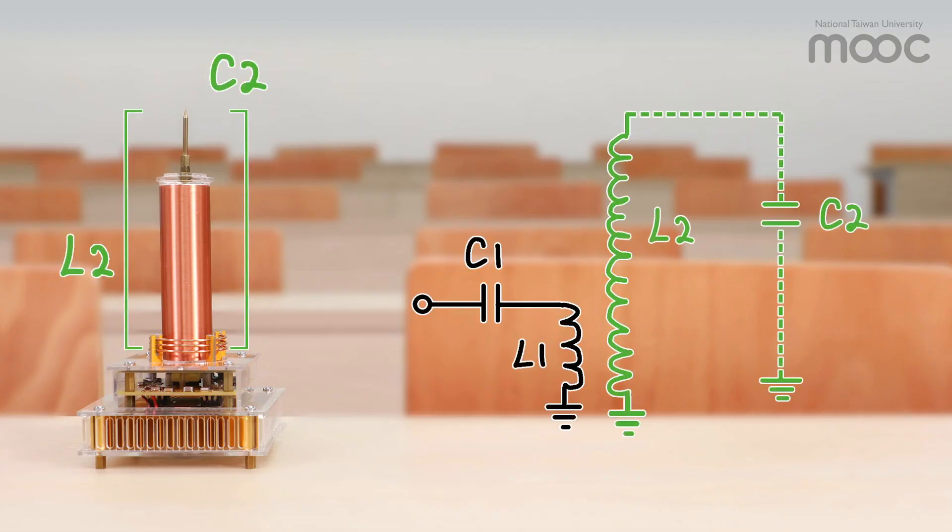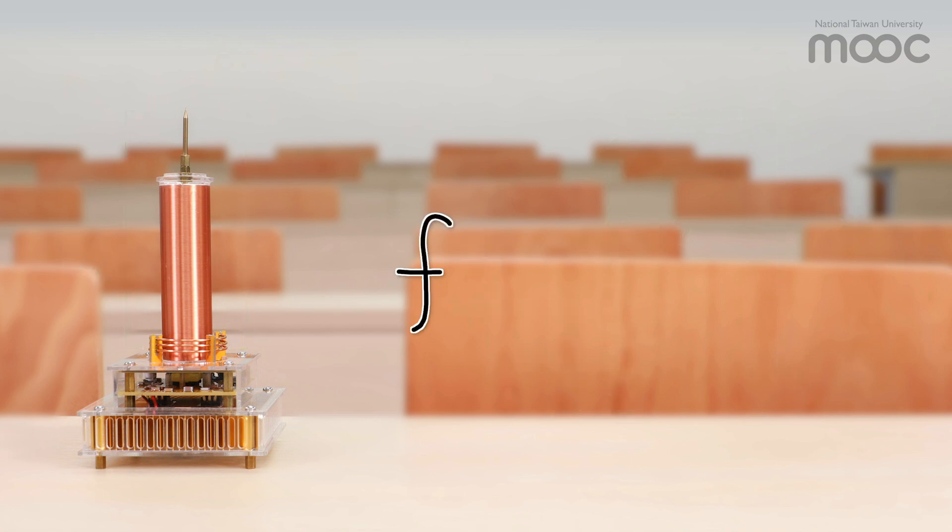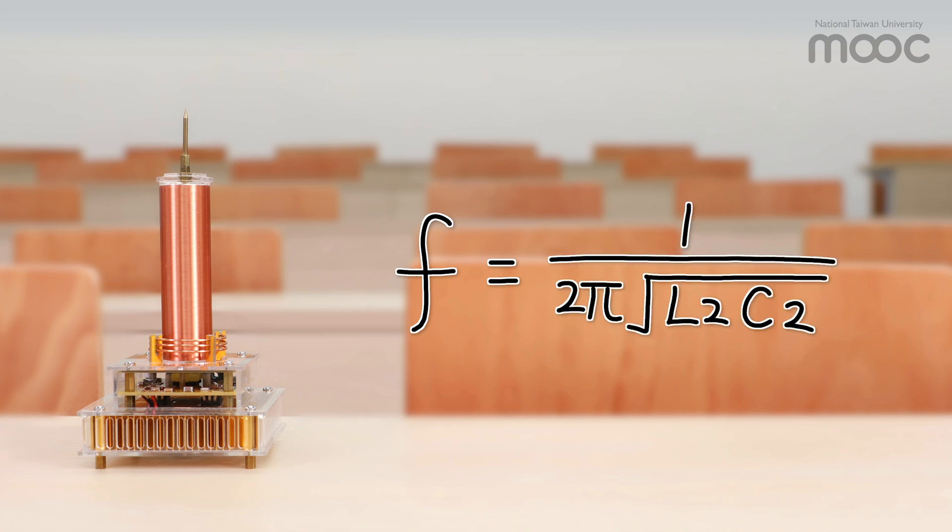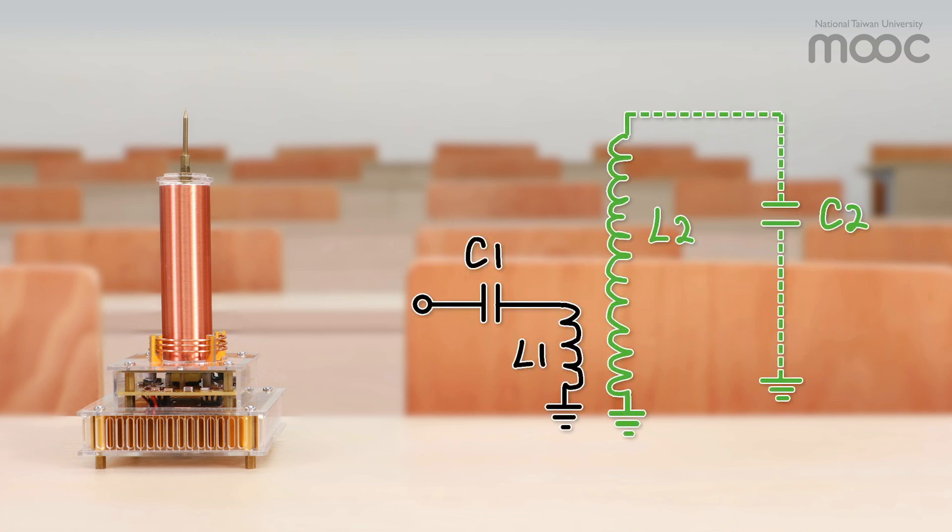A natural resonance will occur when an inductor and a capacitor are connected in a closed loop at a frequency of 1 over 2 pi square root of L2 times C2, where L2 is the inductance value from the number of turns in the secondary winding. The C2 is the capacitance from the air gap.